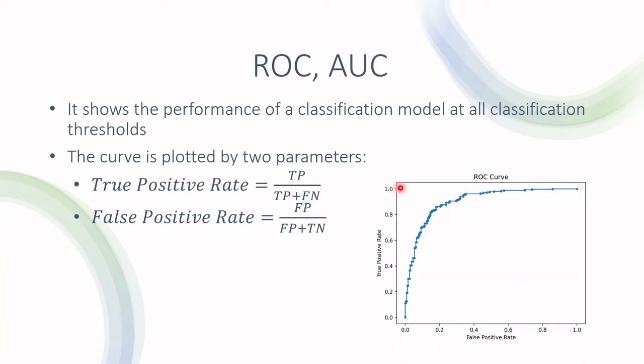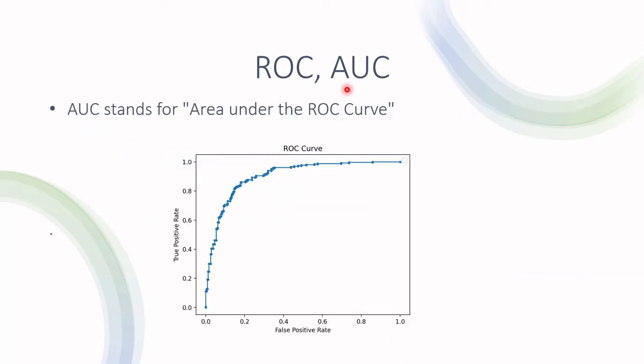And the best possible value for a certain threshold is this point over here where the true positive rate is one and the false positive rate is zero. And AUC usually stands for area under the ROC curve, but it doesn't really have to be that. So we use the area under the curve to compare between different models.